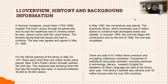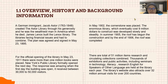Firstly, overview, history and background information. A German immigrant, Jacob Astor, created the Astor Library through his generosity — he was the wealthiest man in America when he died. James Lennox built the Lennox Library. The libraries faced financial issues and had to combine. The plan was agreed and signed on May 23, 1895.